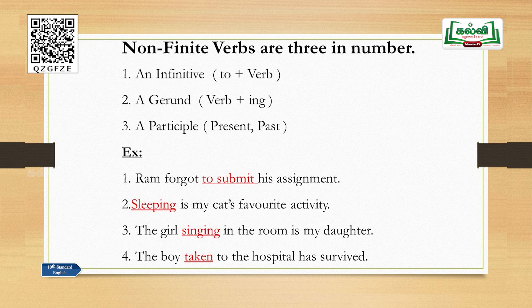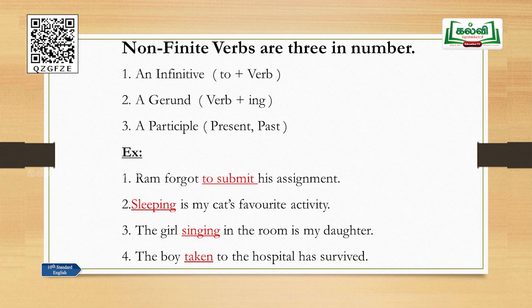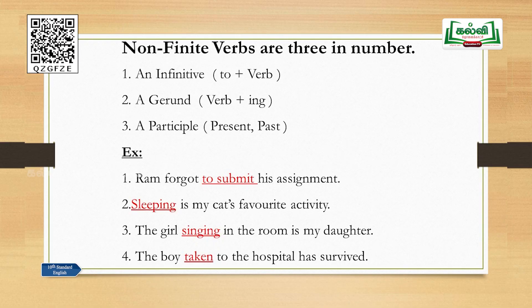A gerund is formed as verb plus '-ing': going, coming, playing, dancing — all these are gerunds. Number three: a participle. We have present participle and past participle. Present participle has the form verb plus '-ing.' For past participle, take the example: go, went, gone — 'gone' is the past participle form. So there are two kinds of participles: present participle and past participle.